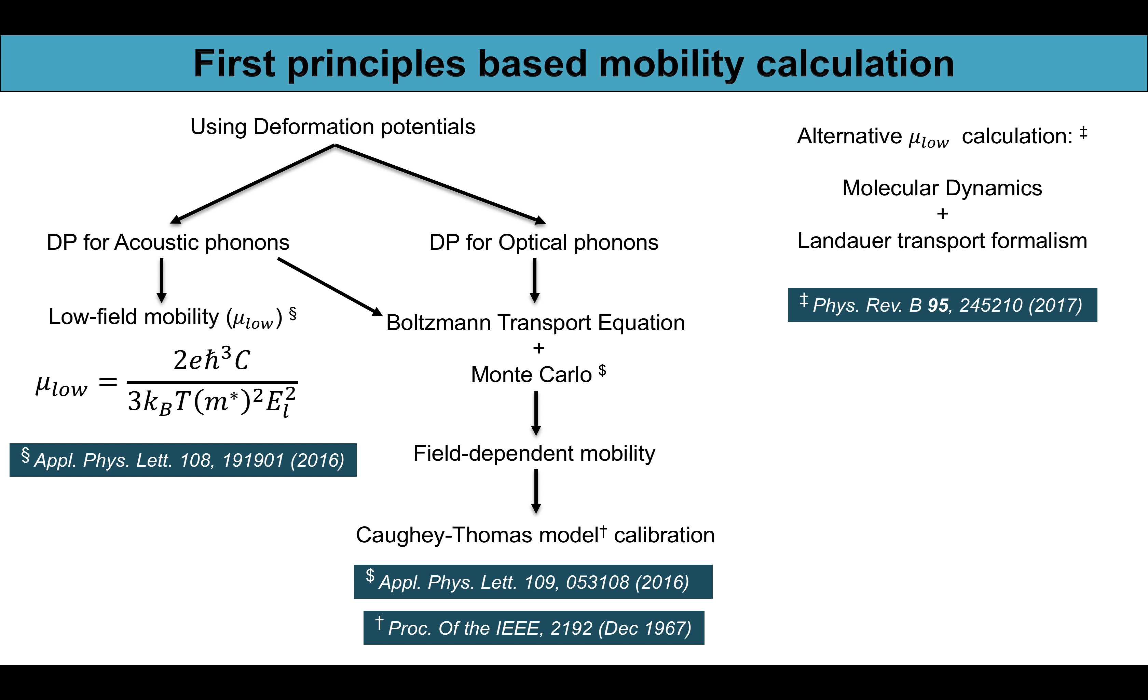In general, after obtaining the deformation potentials for both the acoustic and optical phonons, one can obtain the field dependent mobility profile by solving Boltzmann transport equation using Monte Carlo method and then calibrate it to the Caughey-Thomas model.